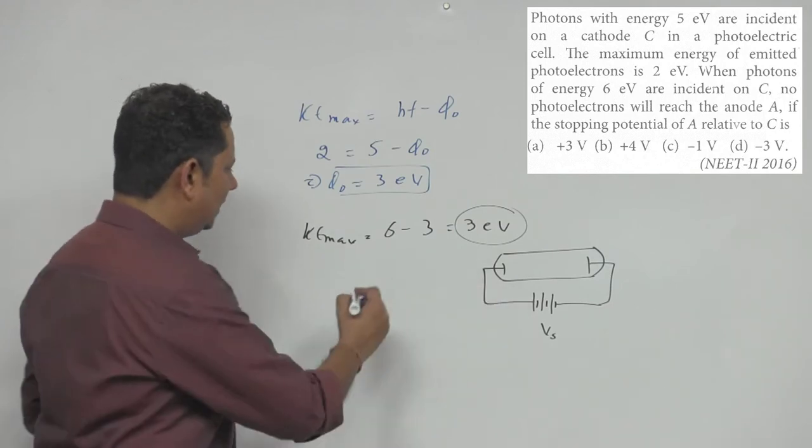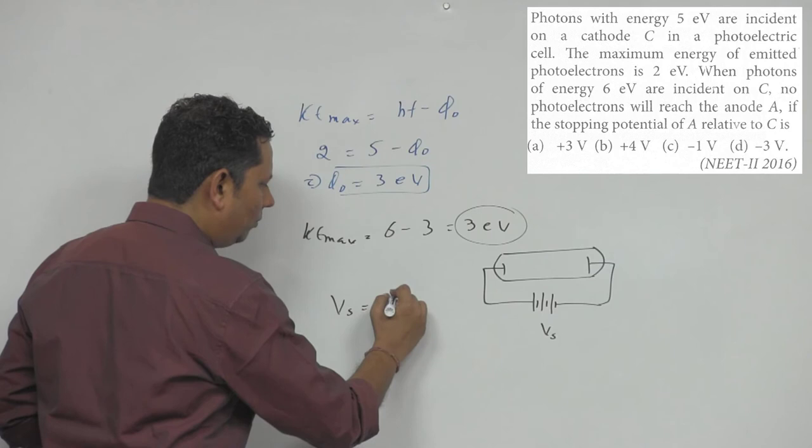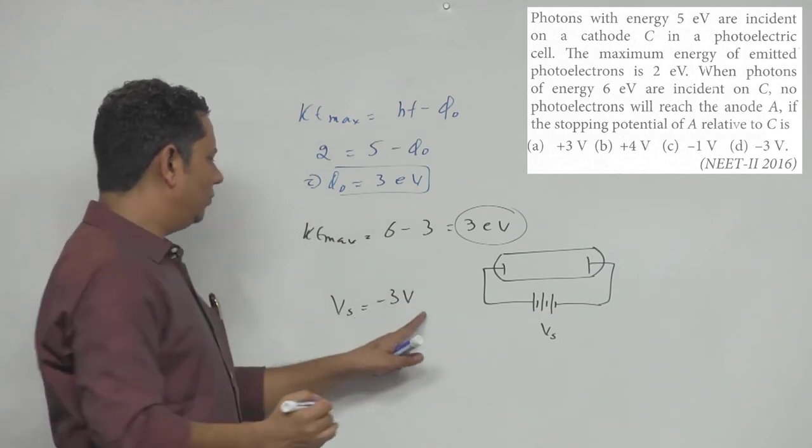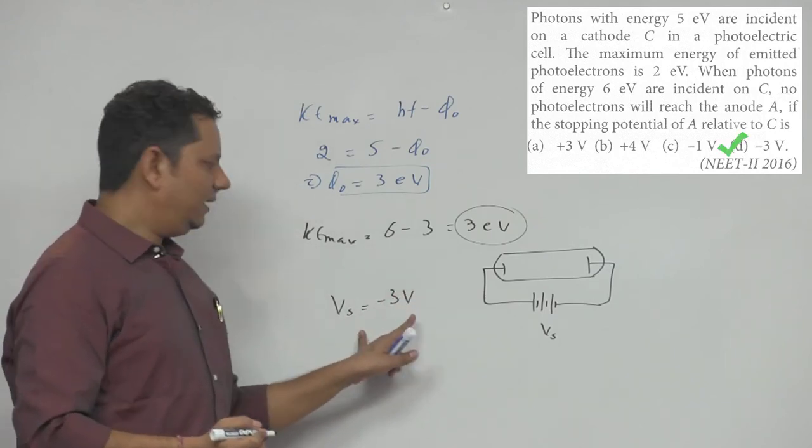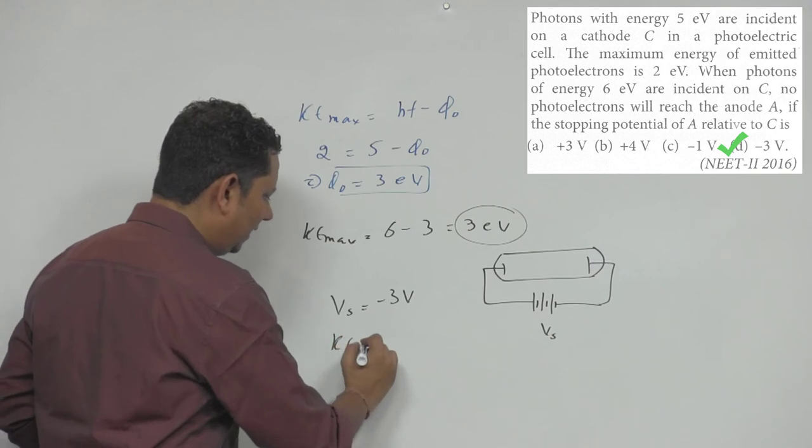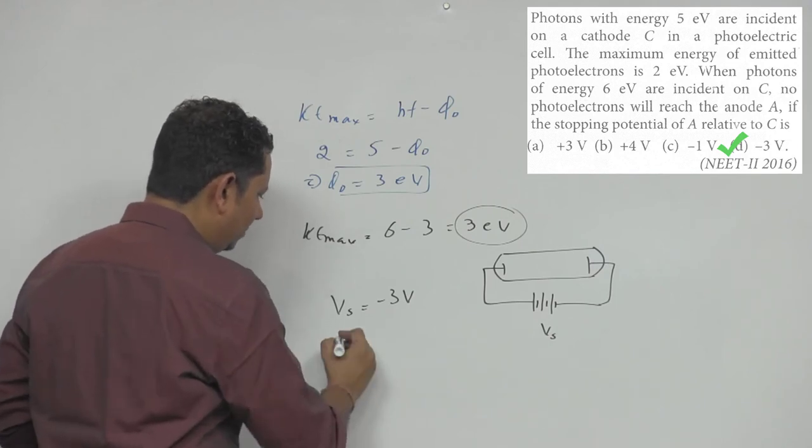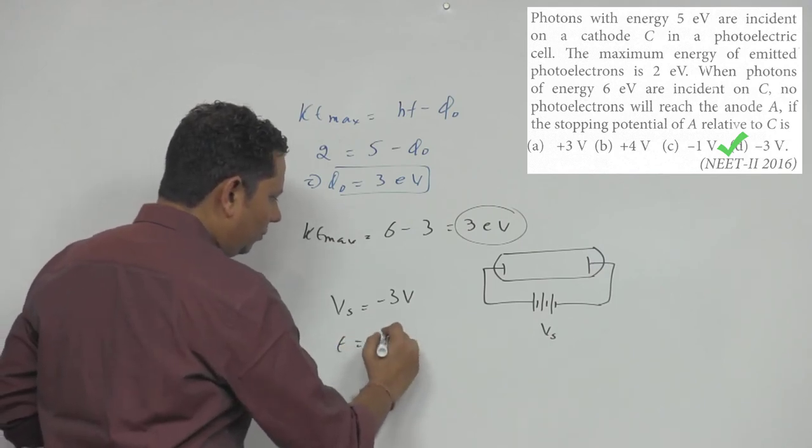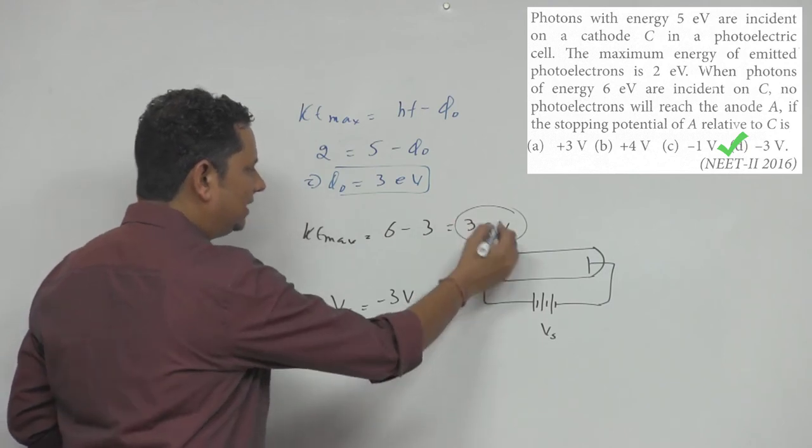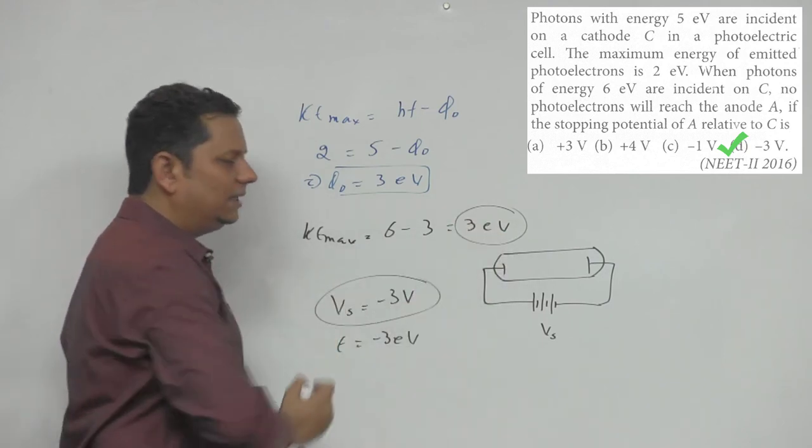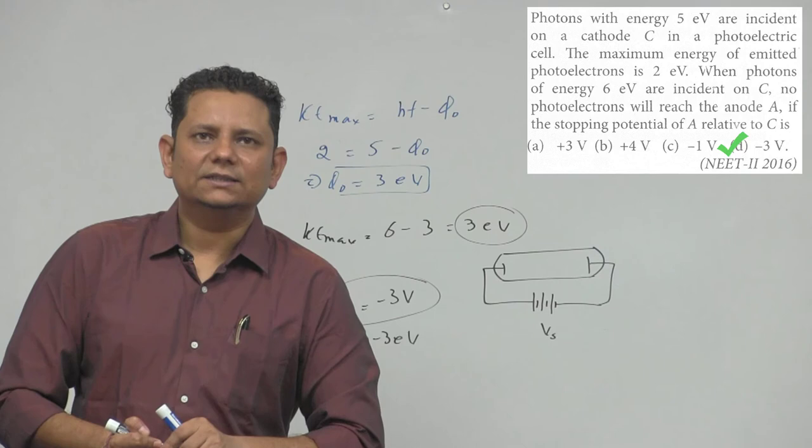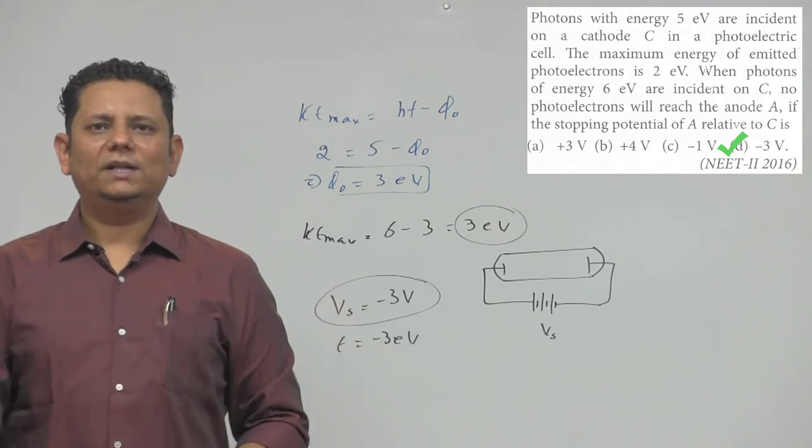What should the stopping potential be? The direct answer is: Vs will be equal to minus 3 electron volt or minus 3 volt. If this much Vs is applied, the energy provided will be equal to minus 3 electron volt, which equals this. So minus 3 electron volt would be the right answer, so option number D would be the correct choice.